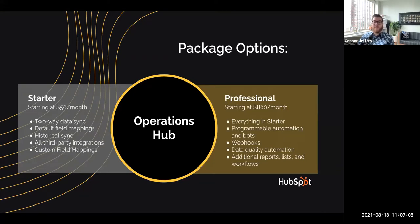With the Starter tier you get field mappings, historical sync, third-party integrations, and the ability to add custom field mappings between your different tools. If you go to the HubSpot app marketplace and search under data sync connected products, those built by HubSpot are supported via Operations Hub. You can do all of those for free, and with Starter you can sync custom fields and additional items as well.